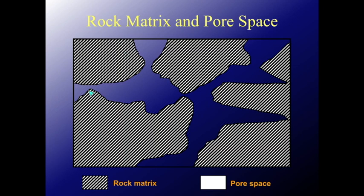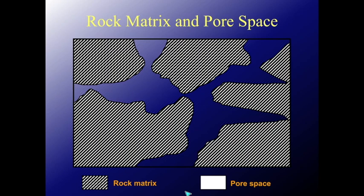The bulk volume minus matrix gives us the pore space. This is the total rock — the whole volume, or bulk volume. It has two portions: one is the matrix, the solid part shown by the dashed region, and in between we have the pore space, which consists of pores. We call this a porous medium.